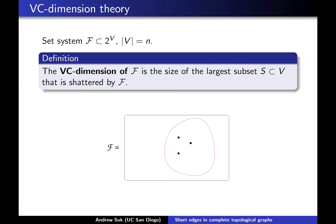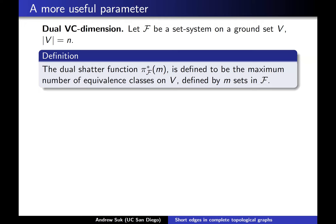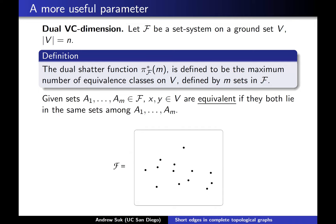The VC dimension of a set system is the size of the largest subset of vertices that can be shattered by your family. I'll be talking about set systems with bounded VC dimension, but actually what's more useful is to look at the dual VC dimension — the VC dimension of the dual set system of F. What's really important is to look at what's called the dual shatter function of F. The dual shatter function π*(F, m) is the maximum number of equivalence classes on your vertex set defined by any m sets in the family.